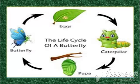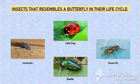Eggs, then caterpillar, then pupa, then butterfly, then the egg is laid again, then caterpillar, then pupa, then butterfly — like this, the cycle continues.